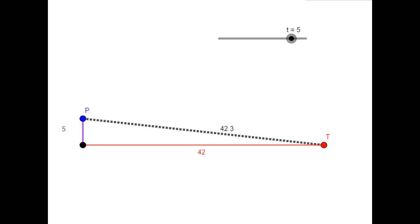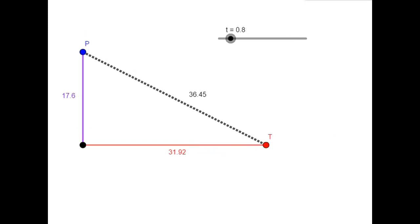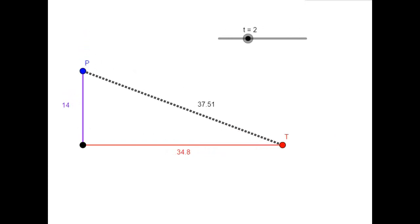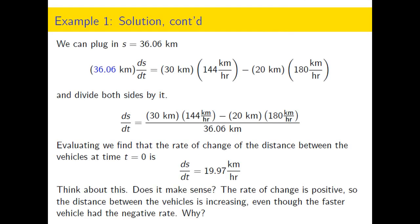So even though the police cruiser is driving faster, that hypotenuse is not changing very quickly. So I just wanted to go back and take a look at that to make sure that that made some physical sense. So yes, having a positive quantity, the distance between the cars is growing at a rate of about 20 kilometers per hour.